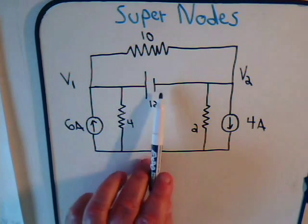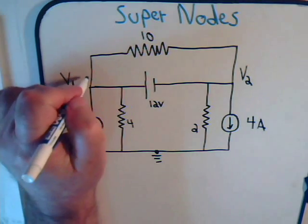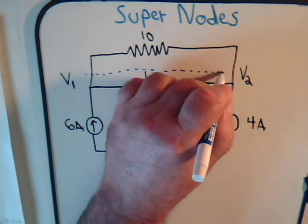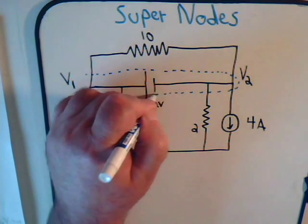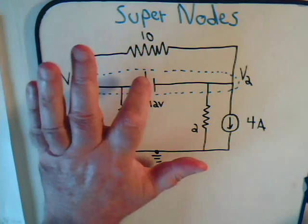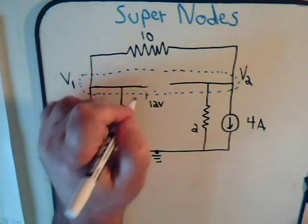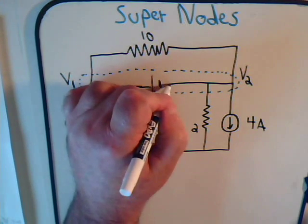Now how do we handle the fact that we have a voltage source here? What we do is for the moment just ignore the voltage source, and we're going to treat this whole upper section as if it was one fused supernode. To help our imagination, we just remove the voltage source for a moment — now we just have one big supernode up here, with node 1 and node 2 fused together.